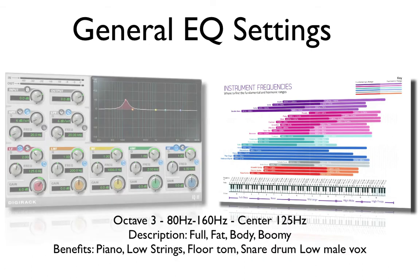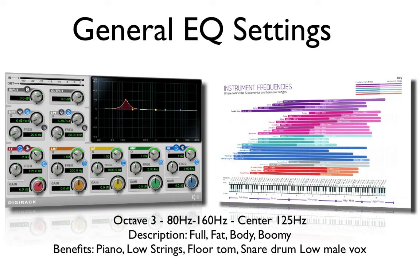Octave 3: 80 hertz through 160 hertz with a center point of 125 hertz, will give you a full, fat body sound. It could also sound a little bit boomy, but not overly boomy. This is great for pianos, low strings, floor toms, snare drums, and even low male voices.